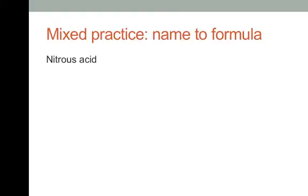Now let's go the other way — name to formula. Nitrous acid: the '-ous' suffix comes from '-ite,' so you need the nitrite ion with hydrogen. Nitrite is NO2−, so you need one hydrogen with NO2− to make HNO2.